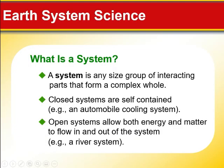We have discussed the Earth system. What is a system? It is any size or group of interacting parts that form a complex whole. It can either be a closed system, like an automobile cooling system, or an open system, which allows both energy and matter to flow in and out — an example is the river system.